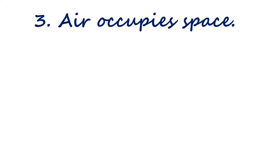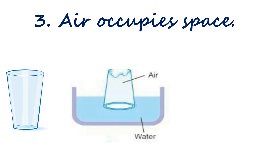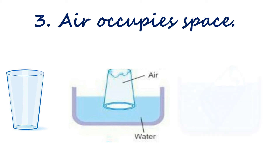The third one is air occupies space. Take a glass and press it gradually into the water. Observe what happens — the water does not enter the glass even on pressing. This happens because the glass is not empty; air is present inside the glass. Now when I tilt the glass, the air goes out and bubbles are formed, and the water goes in.